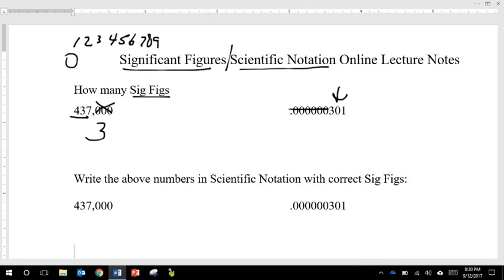This one, on the other hand, also has three significant figures. Now if I had added a zero on the end, it would have had four, but I didn't. So I'm going to erase that and say that this one has three also.